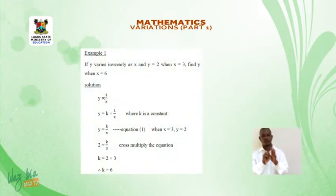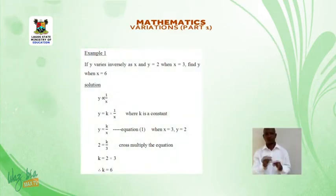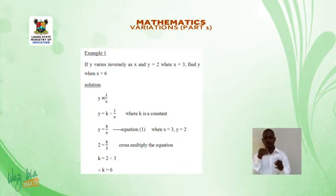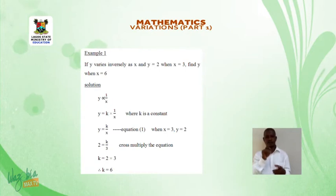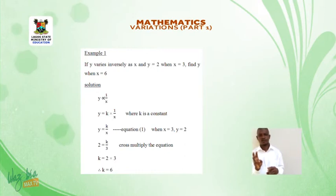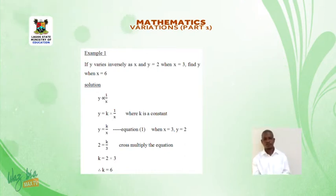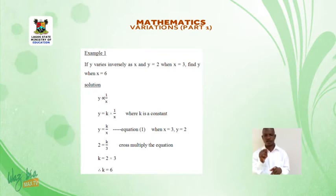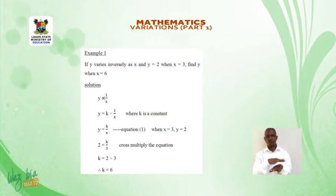Example 1. If y varies inversely as x, and y = 2 when x = 3, find y when x = 6. Solution. Y varies inversely as x, so y = k × (1/x), where k is a constant. Therefore, y = k/x (equation 1).